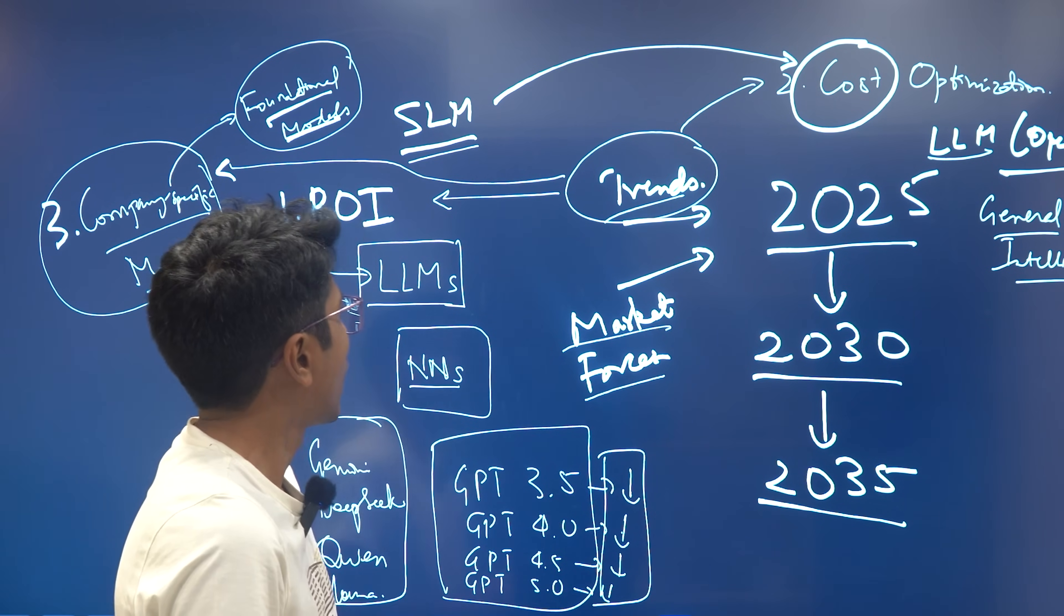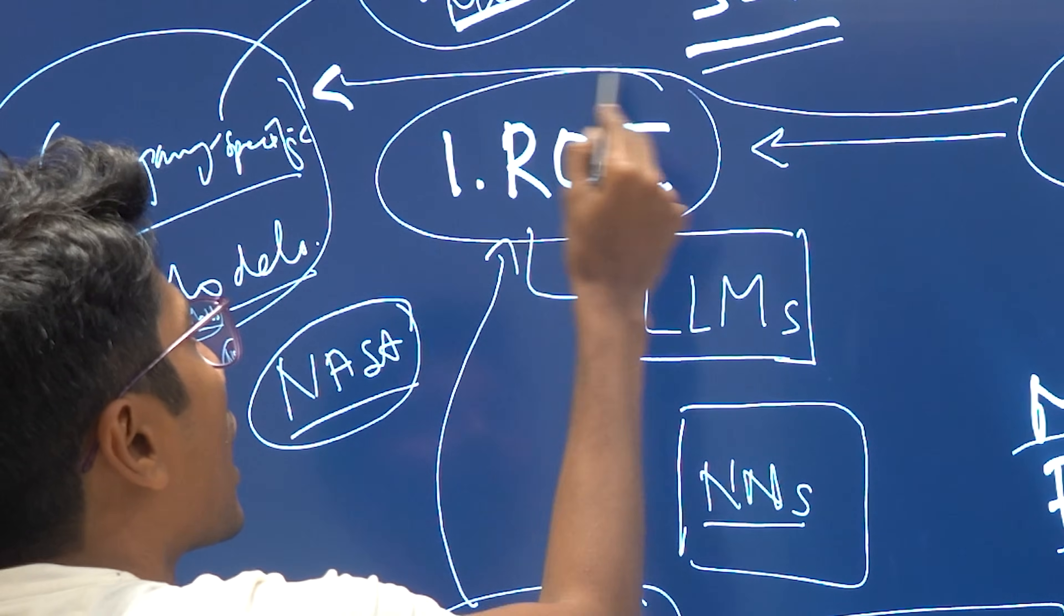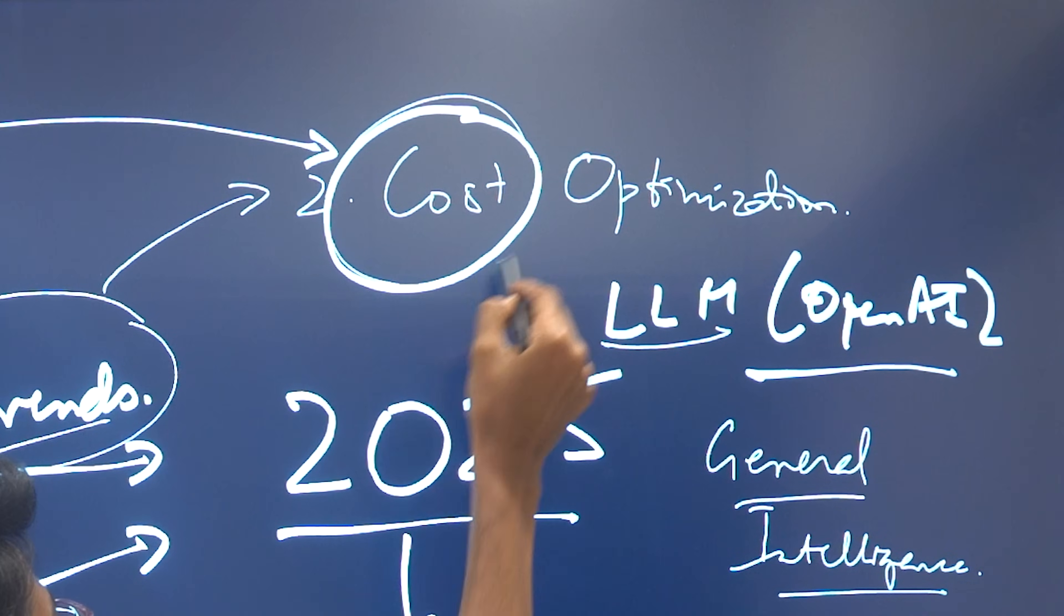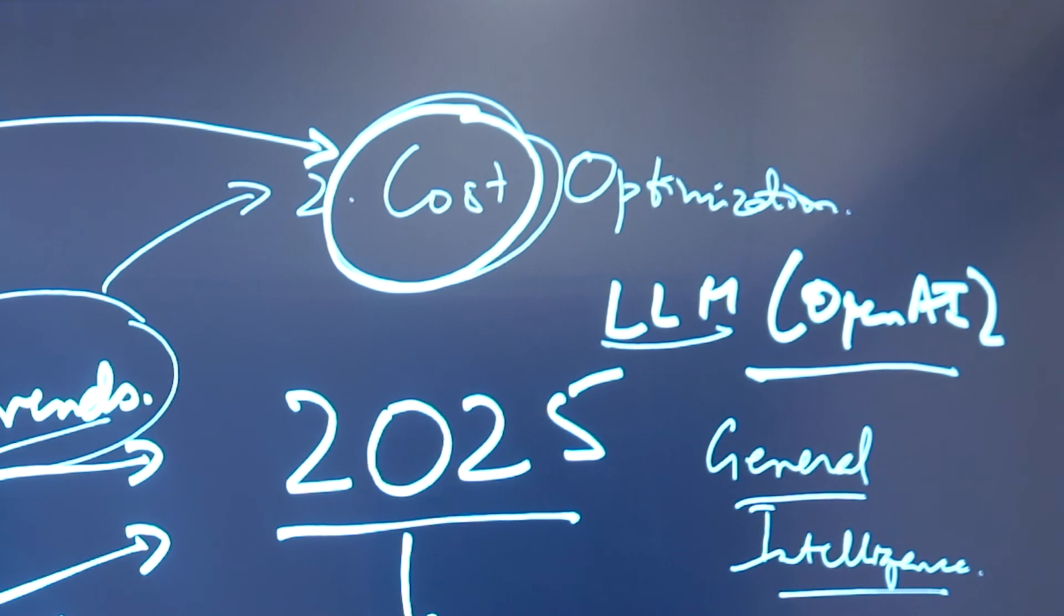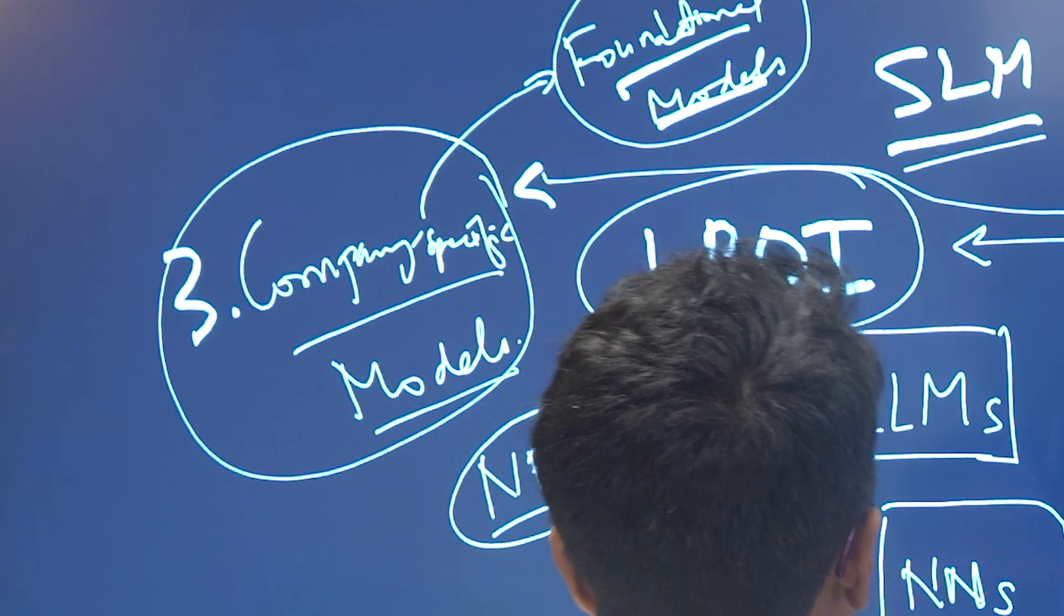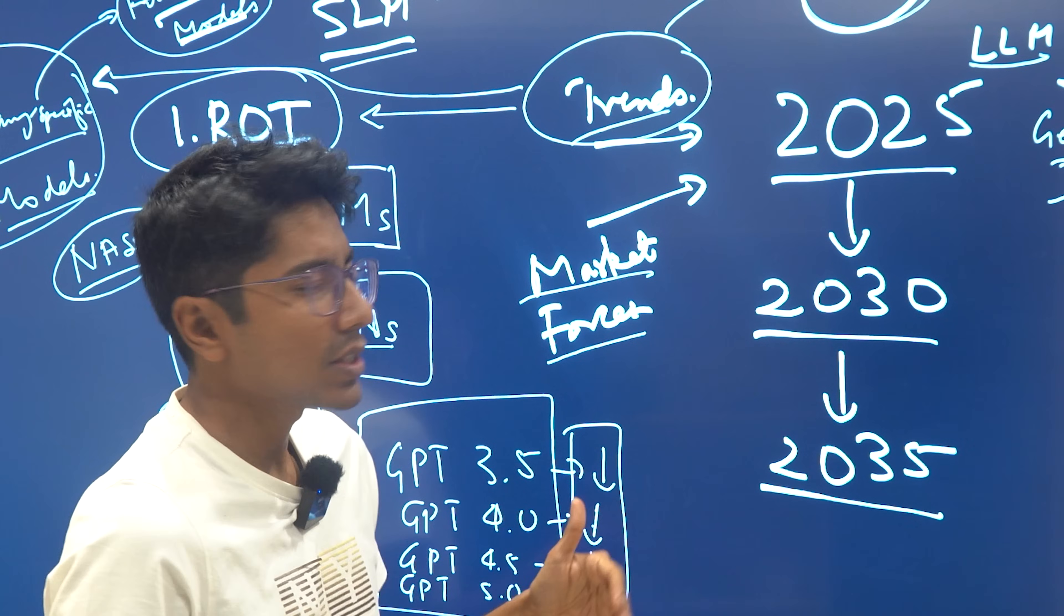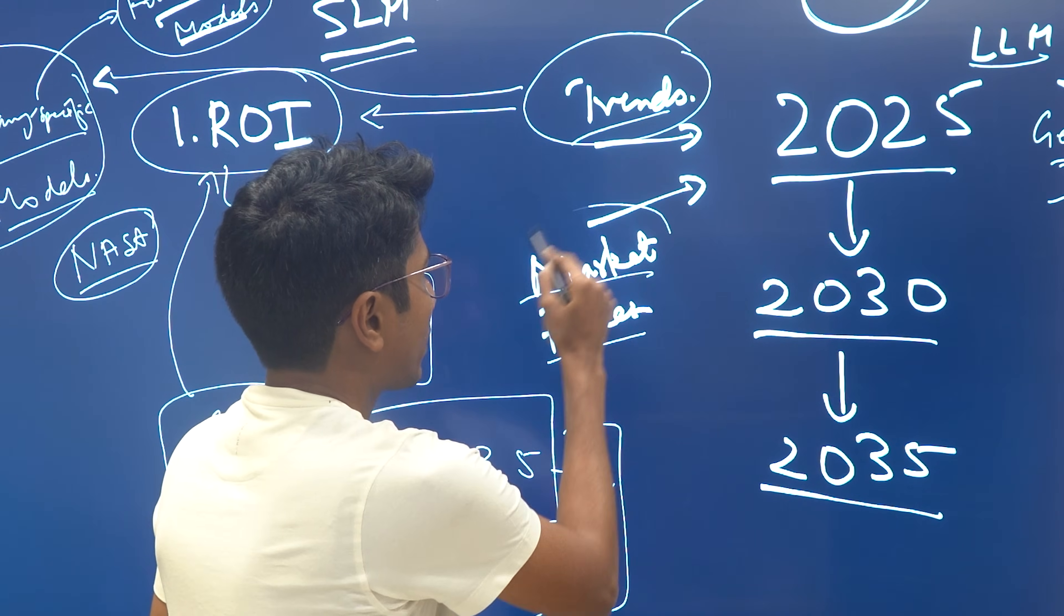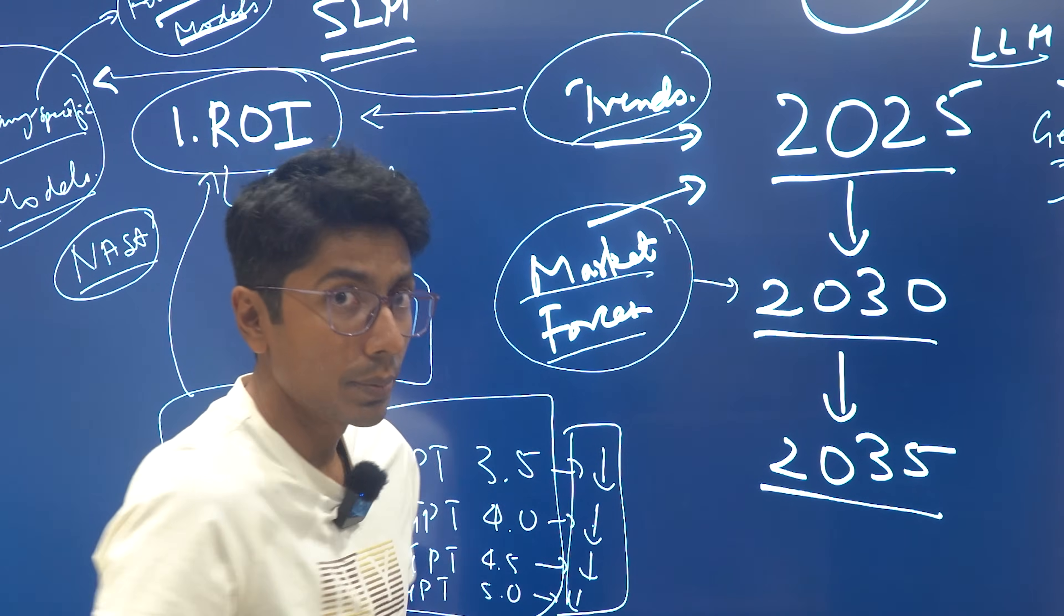So the three trends that we notice here are: one, reduced ROI as the model scale. Second, people really want low cost as they're using these models more and more. And thirdly, companies are building their own models. These give us some clues as to what the future of AI is going to look like. But now let's look at market forces before we make the predictions.